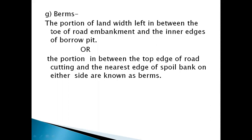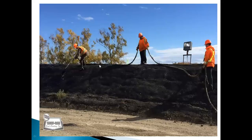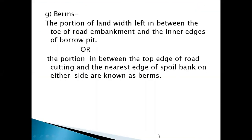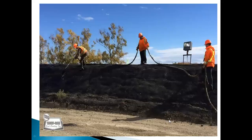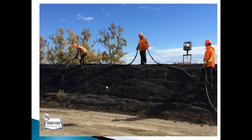The next term is berms. The portion of land width left between the toe of road embankment and the inner edge of the barrow pit is called berms. Alternatively, the portion between the top edge of road cutting and the nearest edge of the soil bank on either side is also known as berms. As shown in the figure, the inner edge of the barrow pit and the toe of embankment — the portion between these is called the berm.